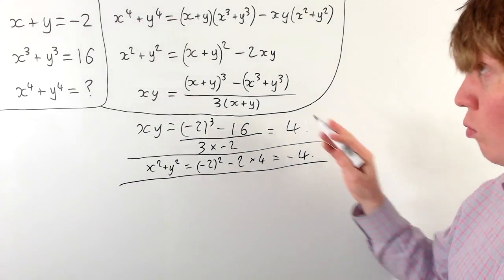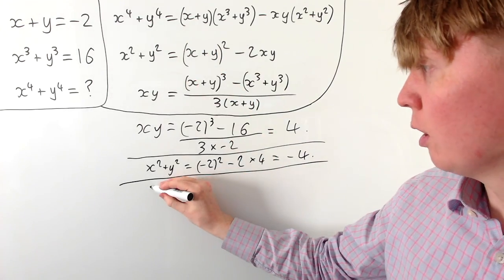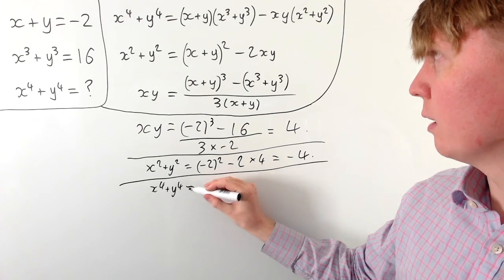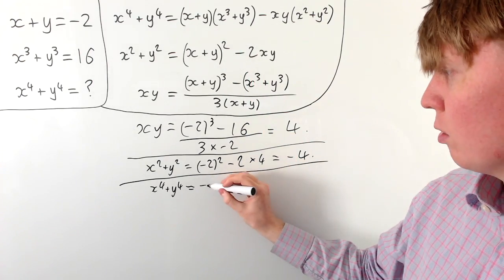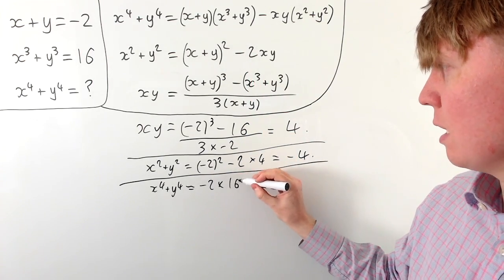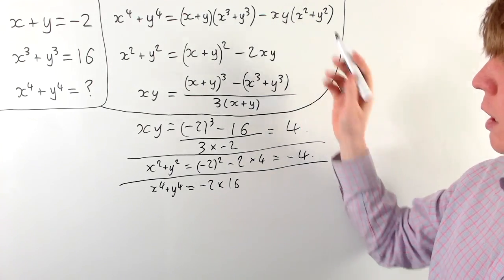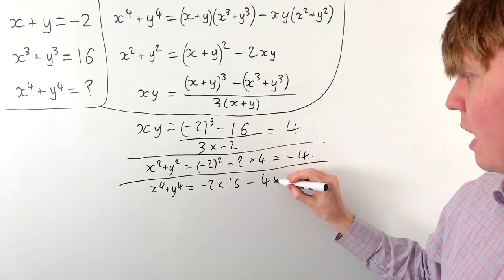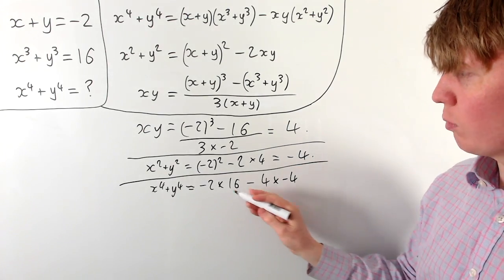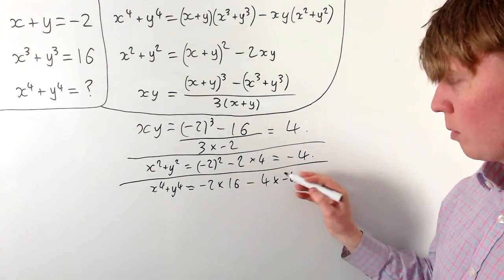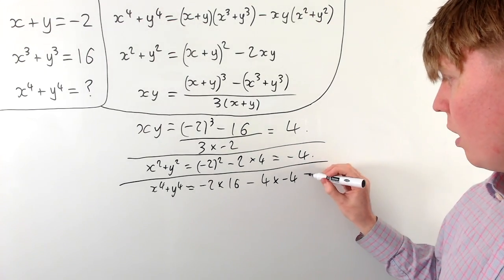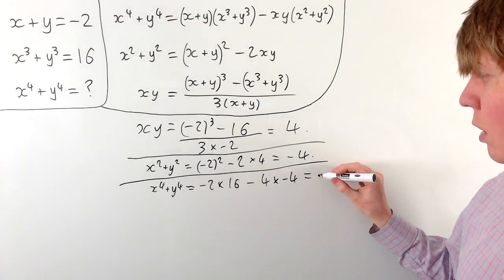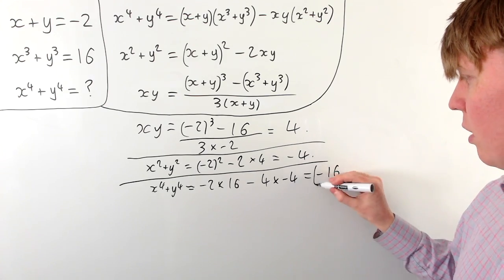Finally we can read off the value of x to the 4 plus y to the 4. This gives us x plus y times x cubed plus y cubed, which is negative 2 times 16, minus xy times x squared plus y squared, so minus 4 times negative 4. That gives us negative 32 plus 16, so x to the 4 plus y to the 4 is equal to negative 16.